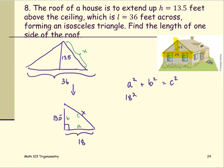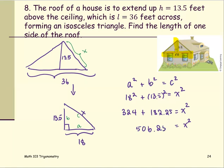We have 18 squared plus 13.5 squared equals X squared. And then simplify the numbers. 18 squared is 324. 13.5 squared is 182.25 equals X squared. Or X squared equals 506.25.